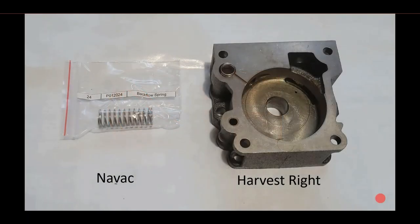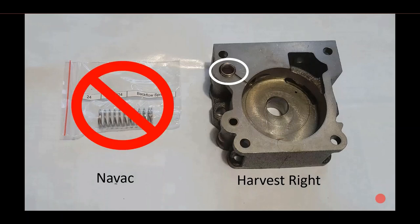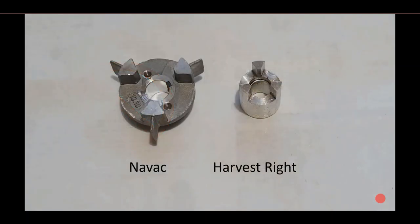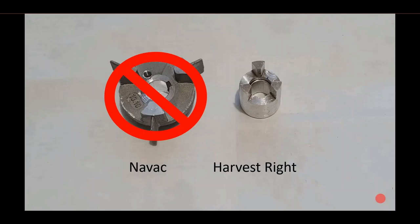If you look at the pressure release spring right there on the premier pump, the NAVVAC pump spring is longer and has a greater diameter and will not work. The NAVVAC coupling is totally different from the Harvest Right coupling and will not work.